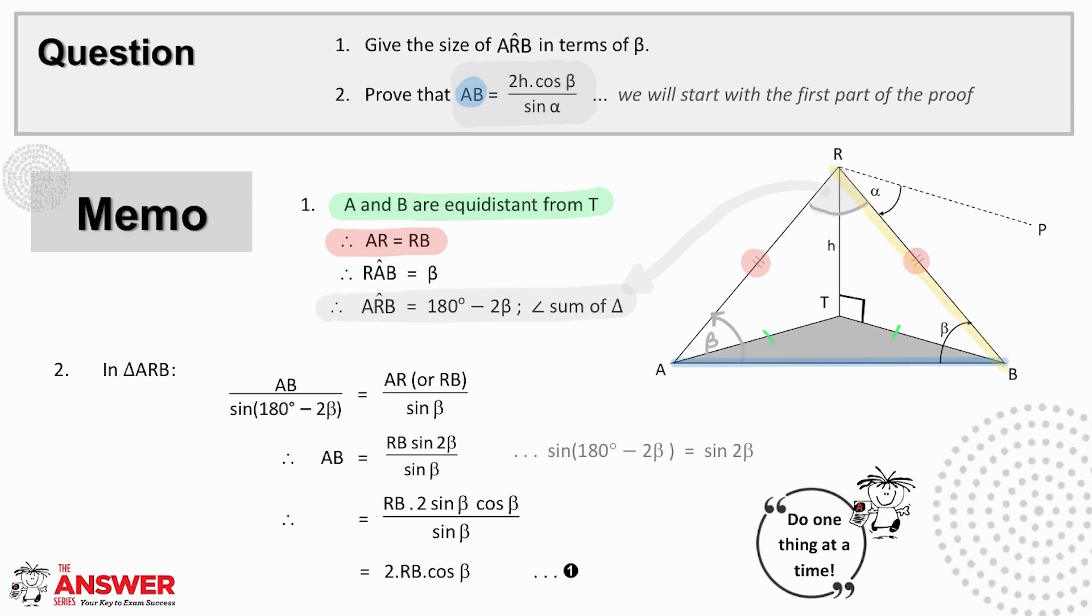And so we must look to find an equation for AB in terms of RB and an equation for RB. You will see that it doesn't matter which one of these equations you find first. So one at a time, let's find an equation for AB first.